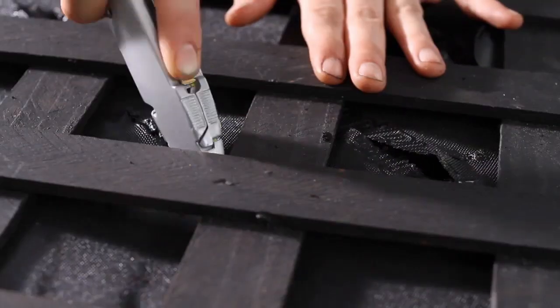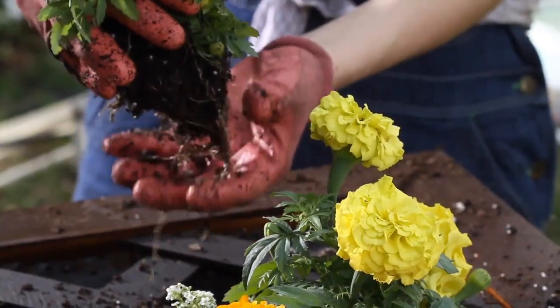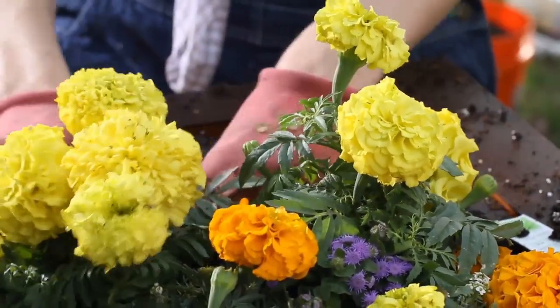Take a razor and cut an X in each opening of the latticework so you can begin planting your flowers. Then start coloring things up. Remember, flowers with shorter stems will look nicer since there's less weight to pull them down.